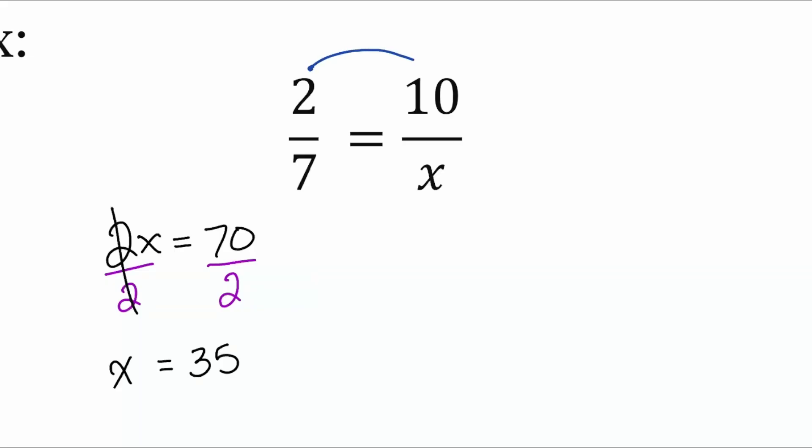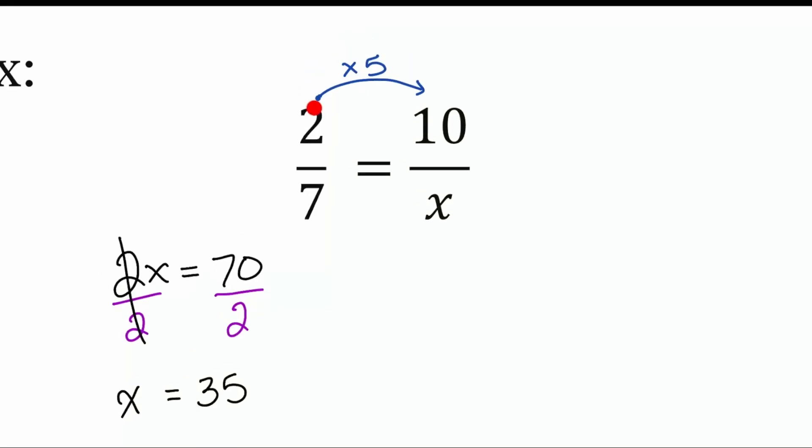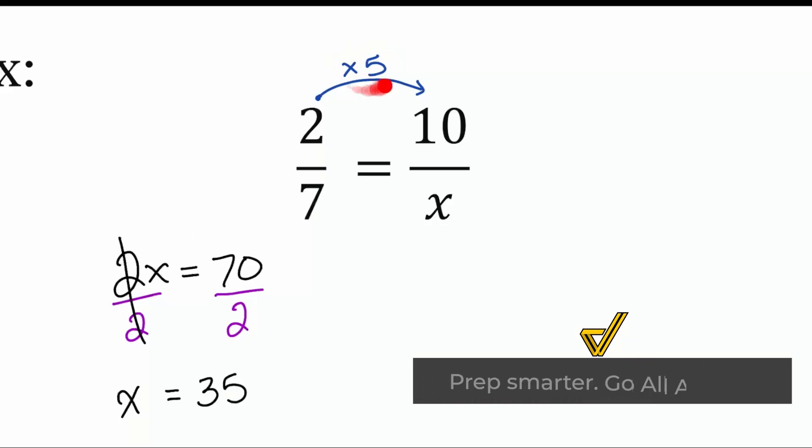we can multiply by 5 to get to 10. So again, 2 times 5 gives us 10. That's how I found out that times 5 is the comparison from left to right.